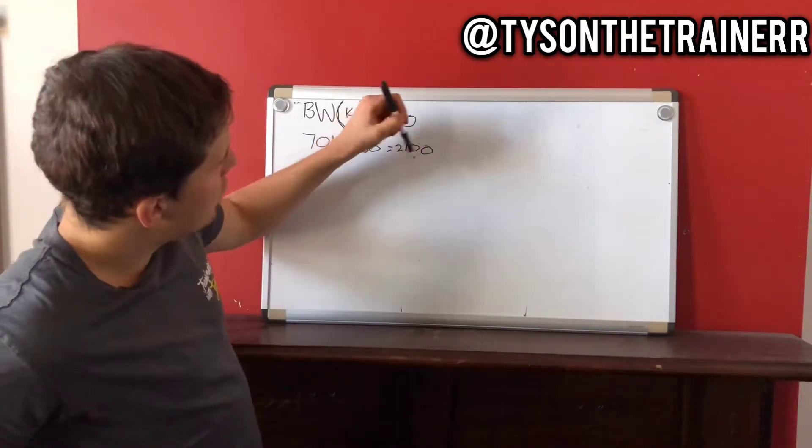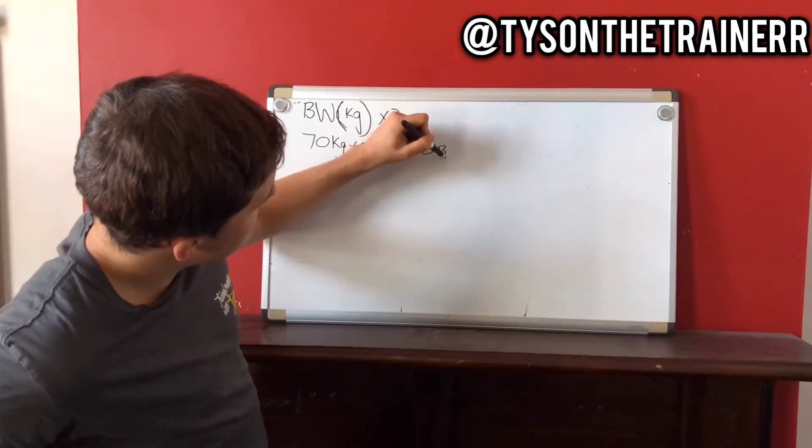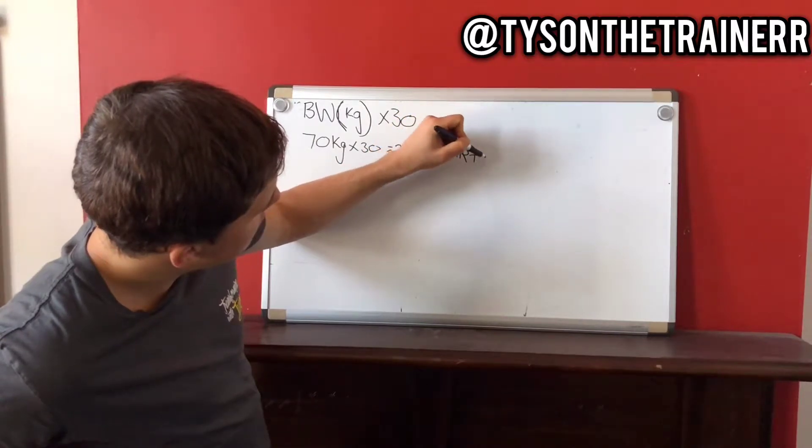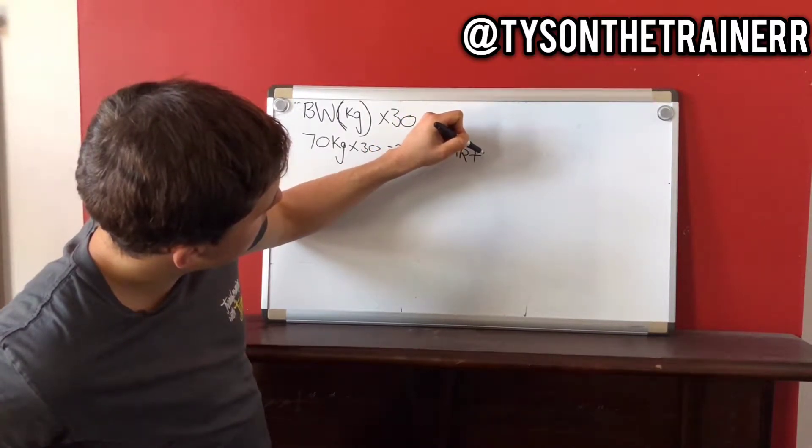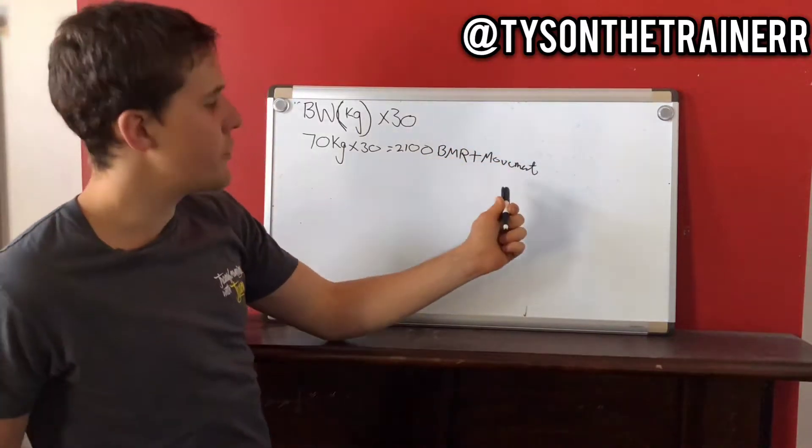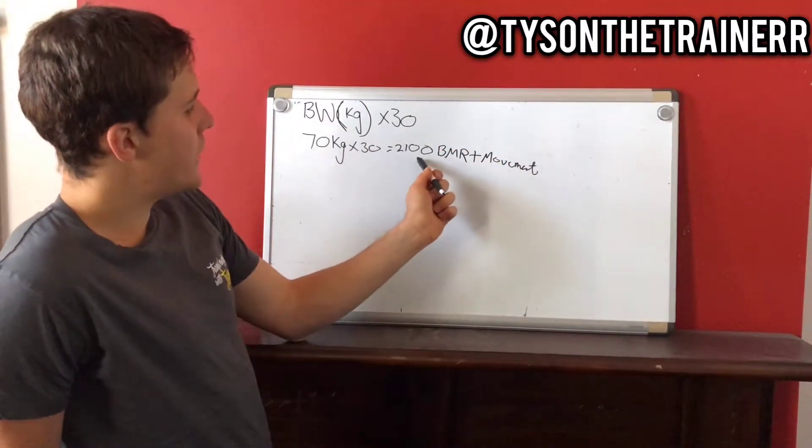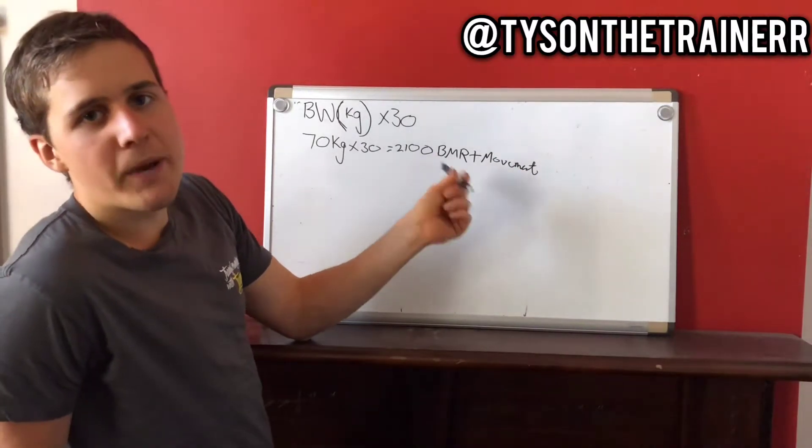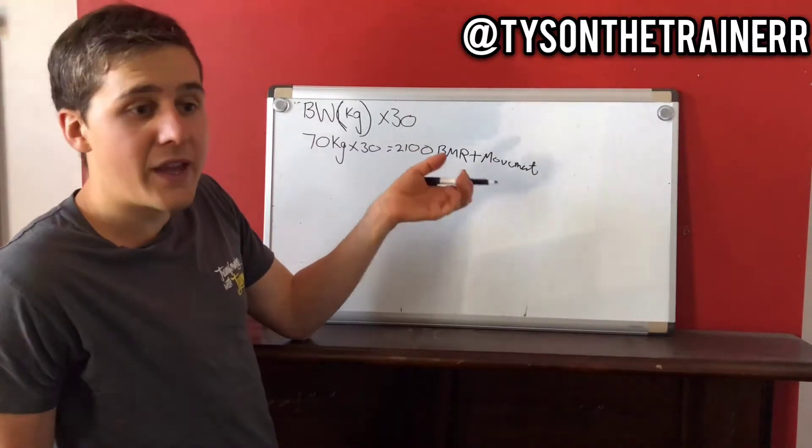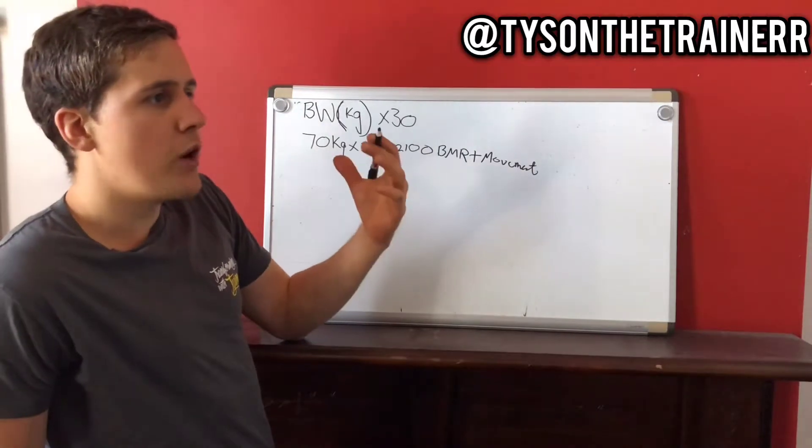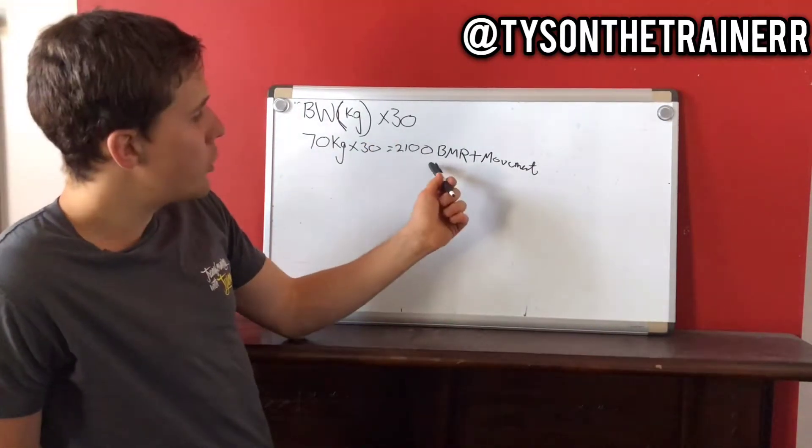So now that you know that, that's known as your basal metabolic rate and also your movement. This looks pretty ugly, but basically, so 2,100 calories equals how many calories you burn on average and including movement. Now this is based on the average person. If you move a lot more than the average desk worker, if you're active all the time, you might burn more calories. If you are very, very sedentary and you hardly move at all, you might burn less.